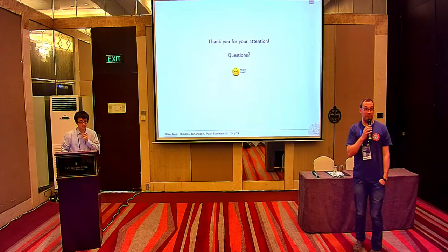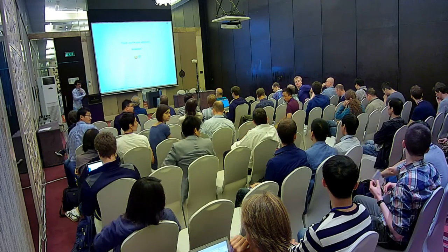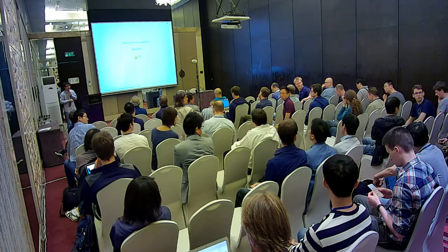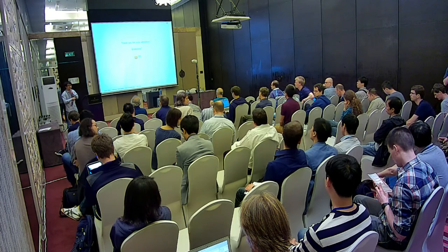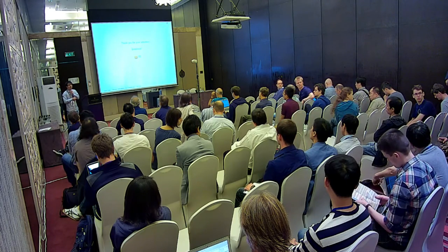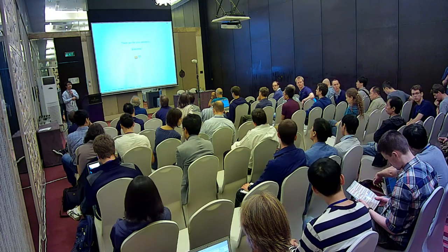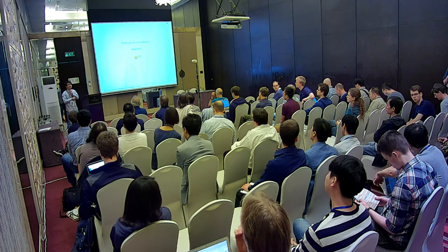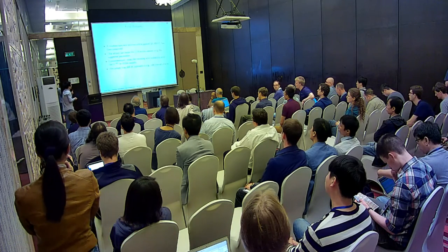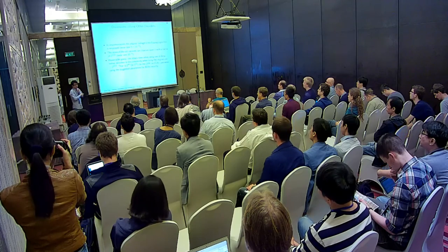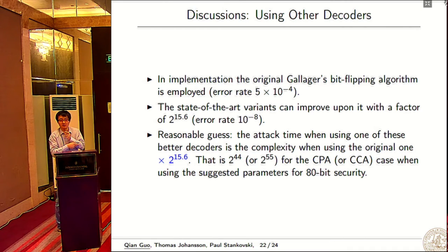Thank you. Are there questions? If you take the CCA model, you managed to break a CCA secure scheme using a chosen ciphertext attack. Was there a mistake in the proof originally, or do you attack something not covered by the original model? I think in the proof they don't take this decoding error into consideration.